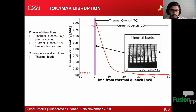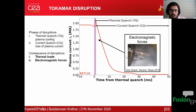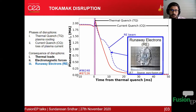Thermal loads usually occur during the thermal quench phase, in which a lot of thermal energy is deposited locally onto the plasma-facing components, which may destroy them, as you can see in the case of JET. The second type of consequence is electromagnetic forces, which can cause damage to tokamak structures. The third type is the notorious runaway electron beam, which causes localized wall melting — as you can see the barrier wall melting for the JET tokamak.